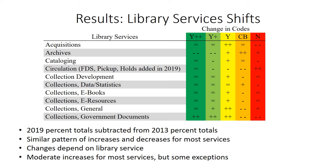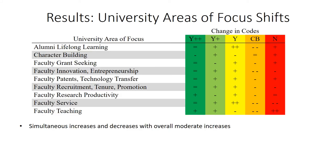Taking a look at all increases and decreases, there was a moderate increase for most services, but there were some exceptions such as circulation. We did the same analysis for the university areas of focus, examining the rate of change in each code across all library services, and found a similar pattern of simultaneous increases and decreases, dependent on the specific university area of focus.